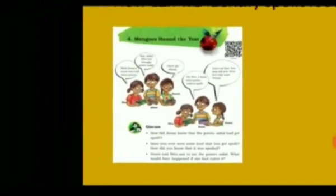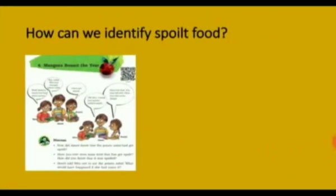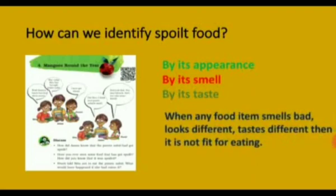So how can we identify spoiled food? We can identify spoiled food by its appearance, by its smell, and by its taste. When any food item smells bad, looks different, or tastes different, then it is not fit for eating.